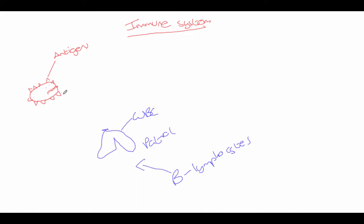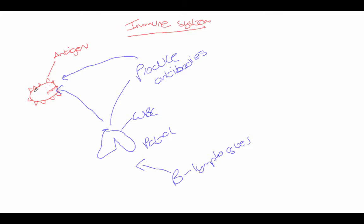If a B lymphocyte came across that organism, it would produce antibodies. Those antibodies will then attach to that particular microorganism. Antibodies are very specific to certain antigens — the antibody detects those unique markers.